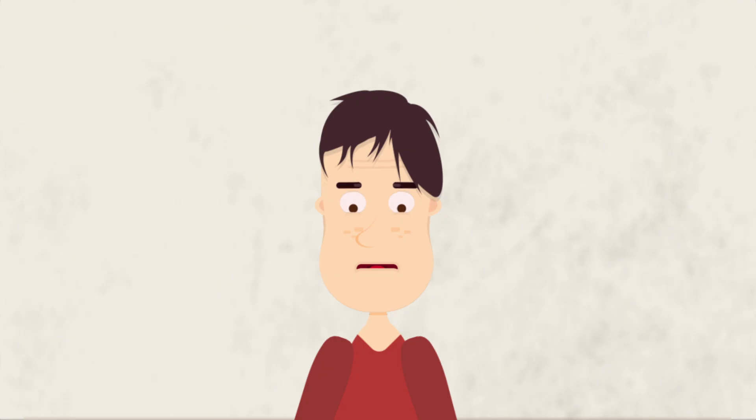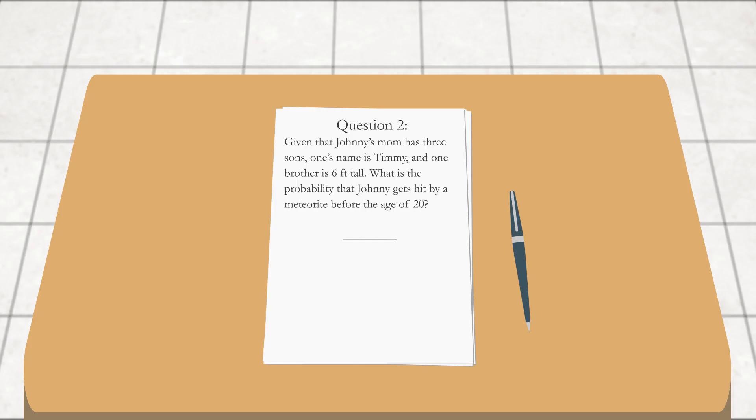All right, so good old prof's definitely going to screw me on question number one. Let's see number two. Given that Johnny's mom has—oh no, this is stats, isn't it? Given that Johnny's mom has three sons, one's name is Timmy and one brother is six feet tall. Why does that matter? What is the probability that Johnny gets hit by a meteorite before the age of 20? I can't tell if this is a stats question, a joke, or a logic problem.